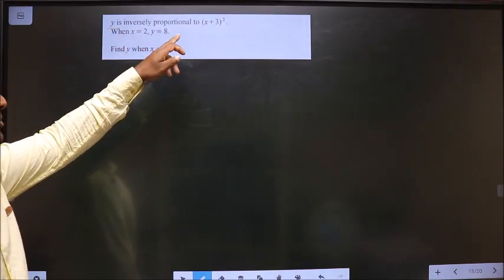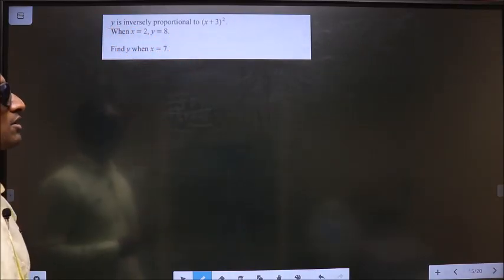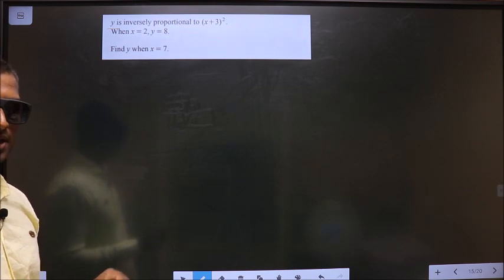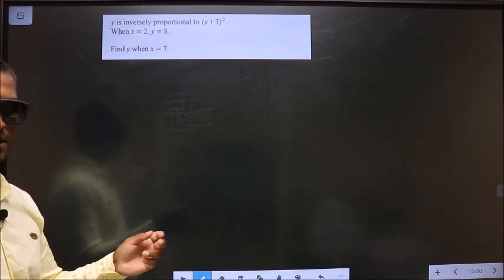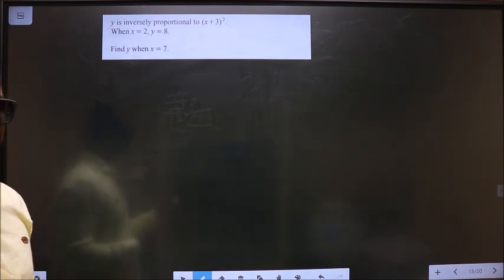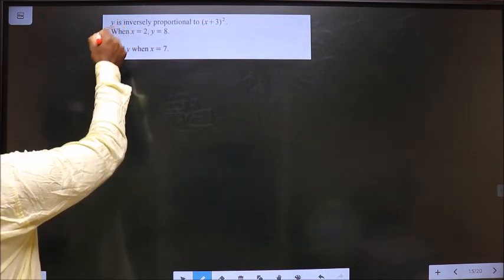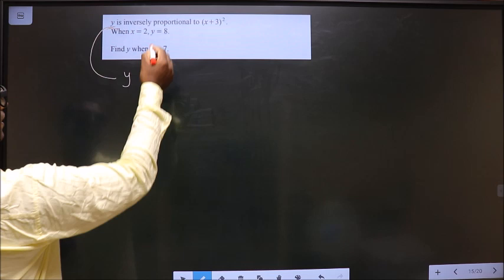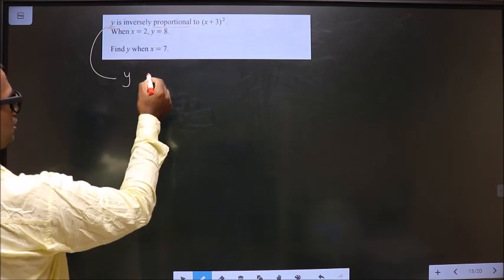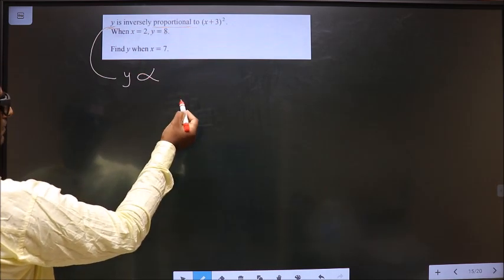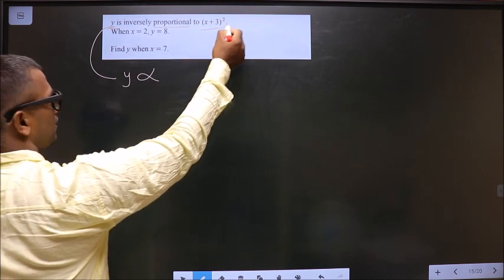y is inversely proportional to x plus 3 whole square. So first, let us convert the given statement into a mathematical equation in this way. Starting with y. He said proportional, so put proportional symbol to x plus 3 whole square.